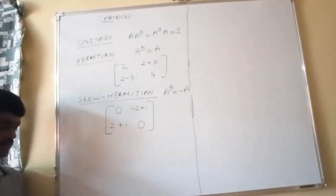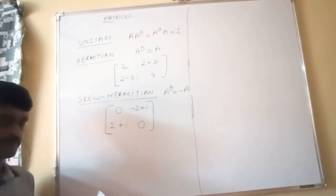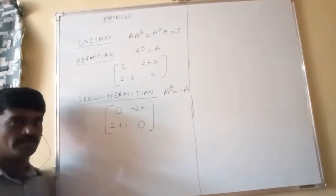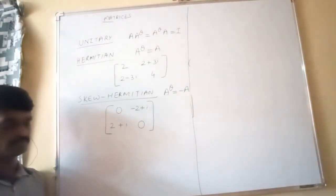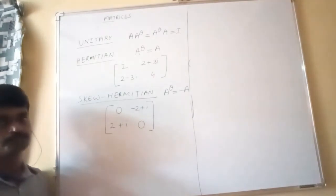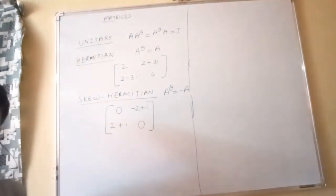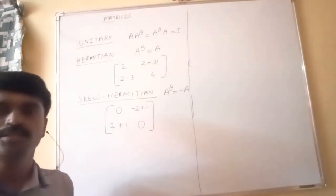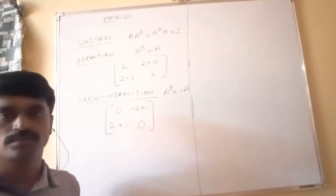So these are some definitions which are not present in the NCRT textbook. With this, the theory part of matrices is over. In the next session, I am going to start some problems. Thank you.